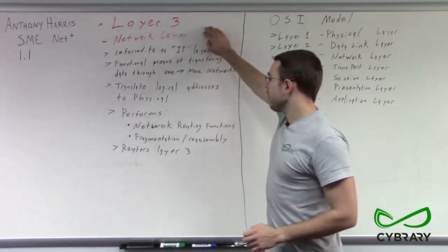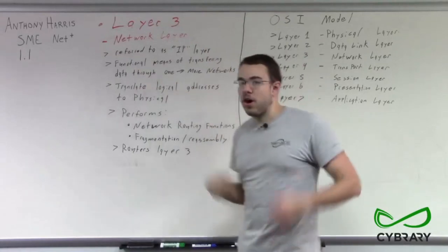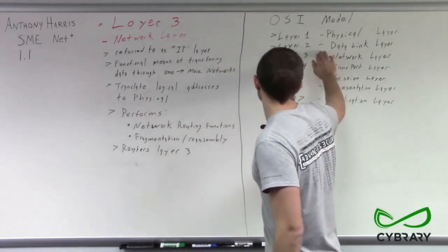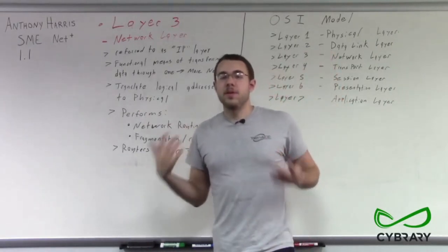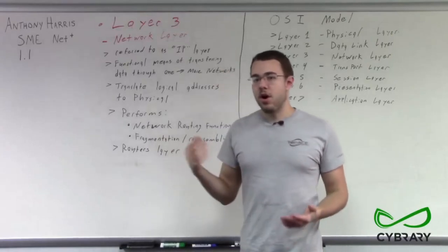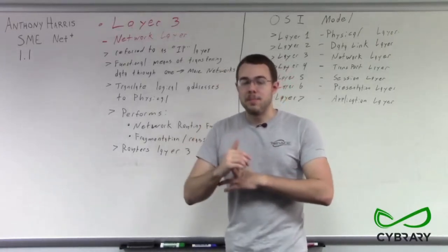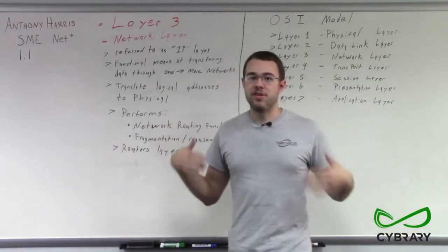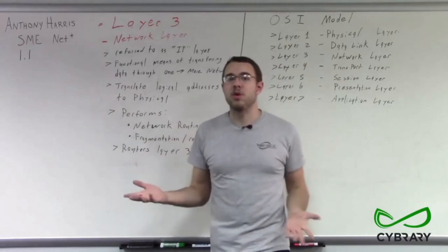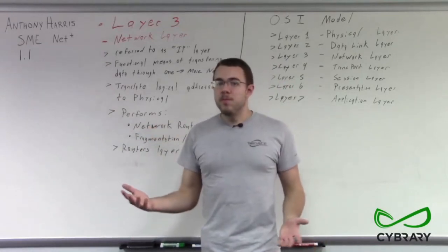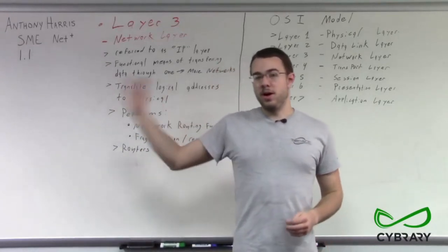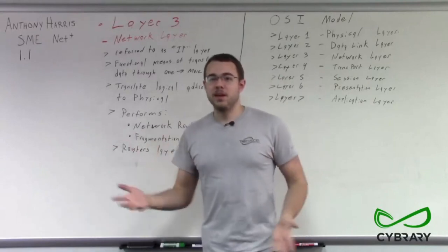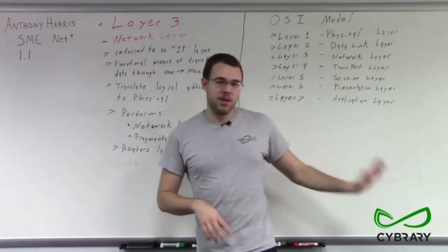At layer 3, we're going to translate our logical addresses — our IP addresses — to the physical addresses, such as our MAC addresses on layer 2, our data link layer. All of our computers with a network interface card have a MAC address, and they also have an IP address. You might ask why we need both. That would relate to globally unique IPv6 addresses that are being developed, but we will talk about those a little bit later.